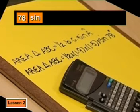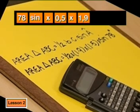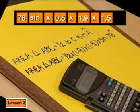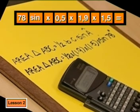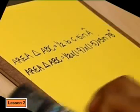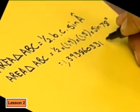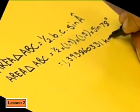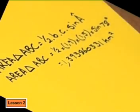I'll start with the sine of 78 degrees, then times by 0.5 times 1.9 times 1.5 equals 1.39386. The values were in kilometers, so our answers here must be in square kilometers.